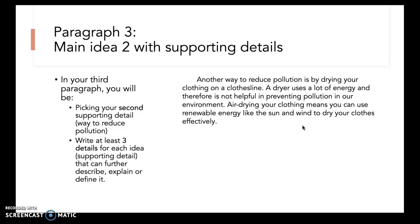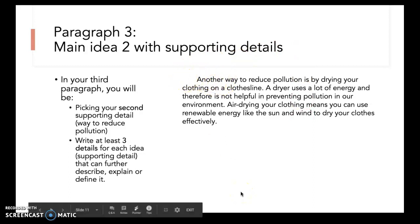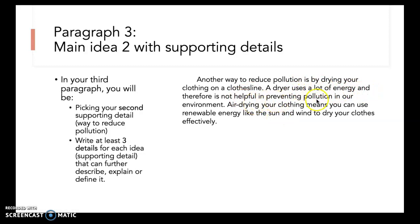For your third paragraph, you'll be writing about your second main idea with supporting details. It can't just be one sentence — this is not a hamburger paragraph. You're now developing the skills you learned writing a hamburger paragraph and learning to provide a lot more details. Here's my third paragraph example, again with a transition word and indentation: Another way to reduce pollution is by drying your clothing on a clothesline. A dryer uses a lot of energy and therefore is not helpful in preventing pollution. Air drying your clothing means you can use renewable energy like the sun and wind to dry your clothes effectively.